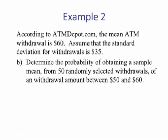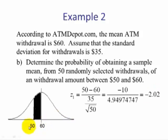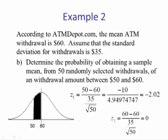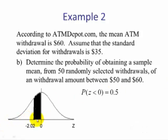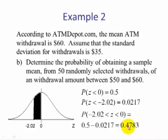Part B: Determine the probability of obtaining a sample mean from the 50 randomly selected withdrawals of a withdrawal amount between $50 and $60. We draw our picture and want the area between 50 and 60. We convert both values to z-scores. The z-score for 50 is negative 2.02, and the z-score for 60 is 0 — it's the mean. To find the area between two z-scores, we look up the largest and smallest, write those probabilities down, and subtract. The probability of being less than 0 is 0.5; the probability of being less than negative 2.02 is 0.0217. Subtracting gives us 0.4783.